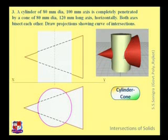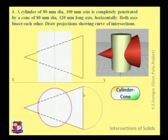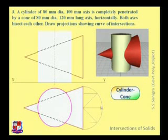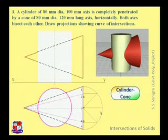Now we need to draw the curve of intersection — two curves would be there. The upper one is an arc and the lower would be a curve. To locate the points of intersection, draw a semicircle, divide it into equal parts, project these points, and draw imaginary generators. Drawing the side view has been skipped here. Instead, the semicircle is directly divided into eight or four equal parts and imaginary generators are drawn.